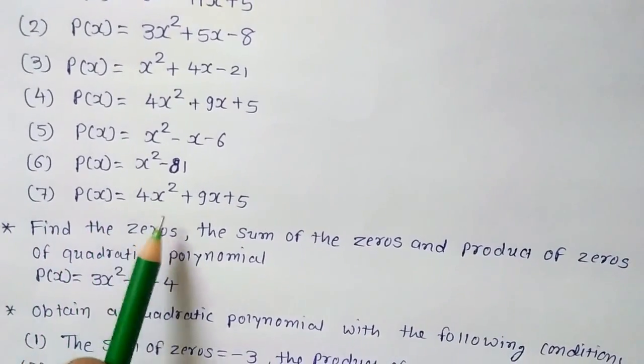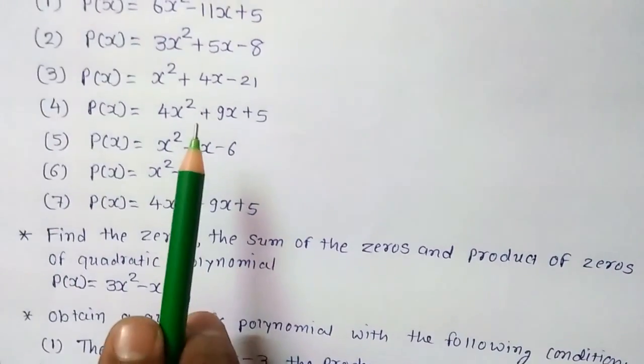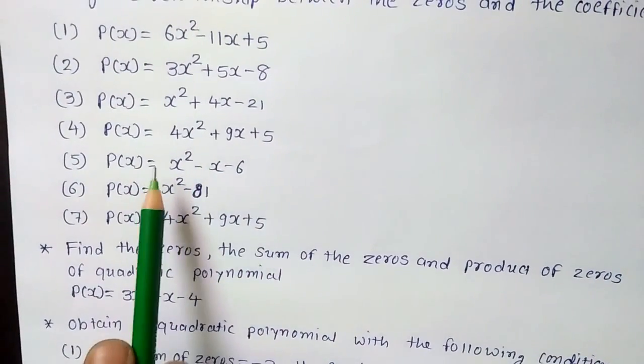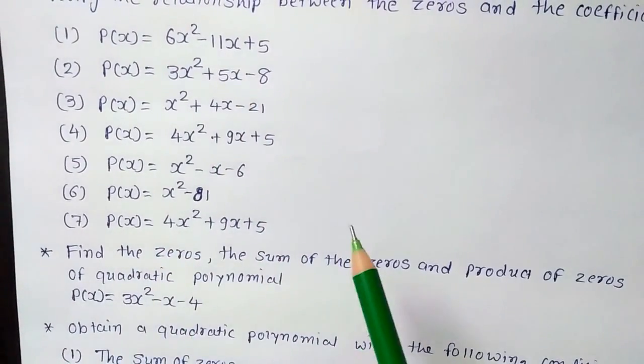Seventh one, p(x) is equal to 4x² plus 9x plus 5. Here in all this given polynomial, in all these questions, you have to first find out the zeros with the help of factorization.